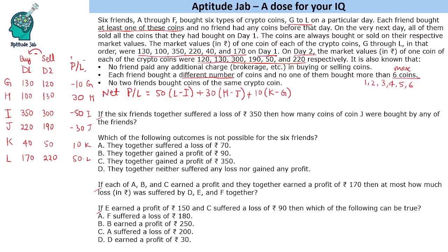Question: if the 6 friends together suffered a loss of 350, how many coins of coin J were bought by any of the friends? The total loss is 350. One key constraint is that the maximum difference in quantities is 5, so no difference value can exceed 5.